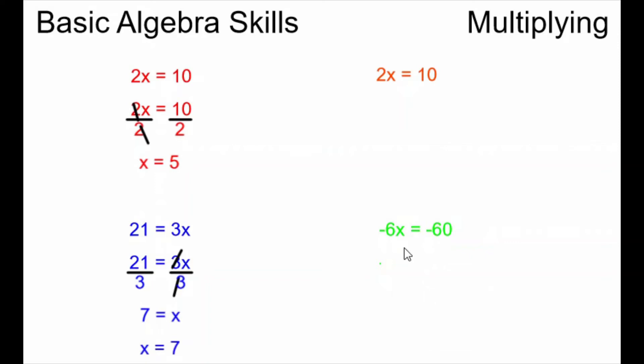In the bottom right example again we have the same situation but this time there are negative numbers involved. But again the process is still the same. My x is not alone, it's being multiplied by a negative 6. So I do the opposite. I divide both sides of the equation by negative 6. These negative 6's cancel. x is now alone on the left side of the equals and negative 60 divided by negative 6 is positive 10. I have my answer.